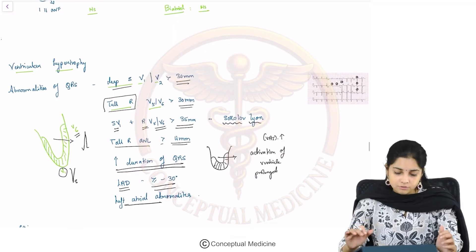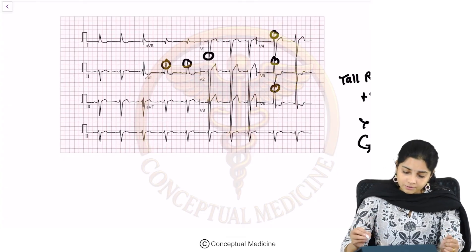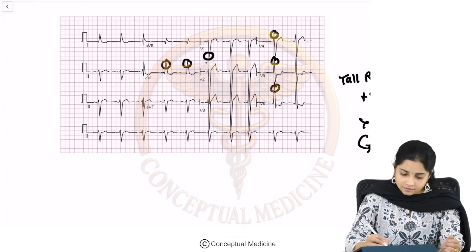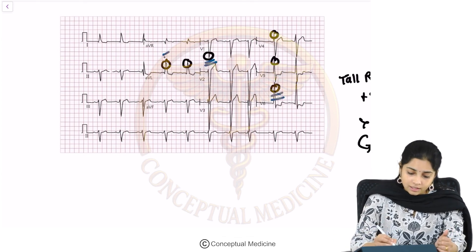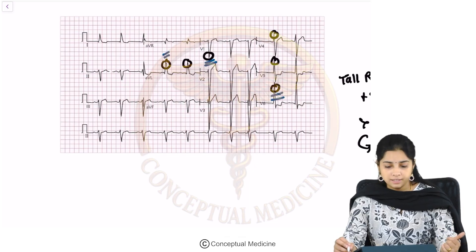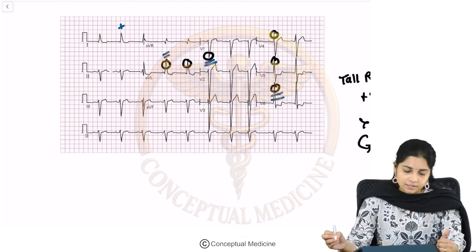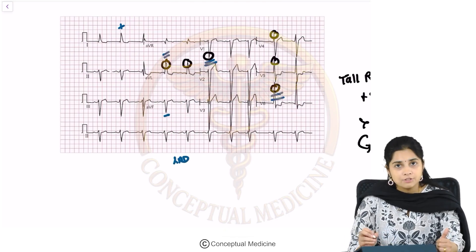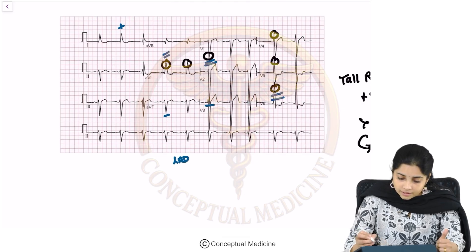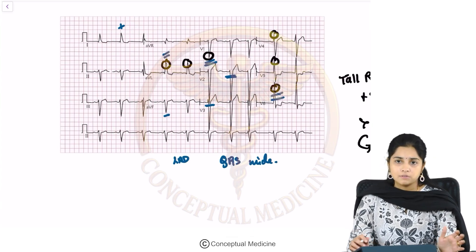To summarize left ventricular hypertrophy on ECG: deep S waves in V1, tall R waves in V5/V6; tall R waves in AVL more than 11mm; left axis deviation — positive QRS in lead 1, negative in AVF; broad QRS complexes; and evidence of left atrial enlargement. This is left ventricular hypertrophy.